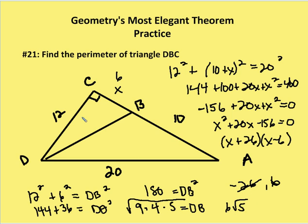DB equals 6 root 5. Adding 12 plus 6 gives 18, so the perimeter of triangle DBC is 18 plus 6 root 5.